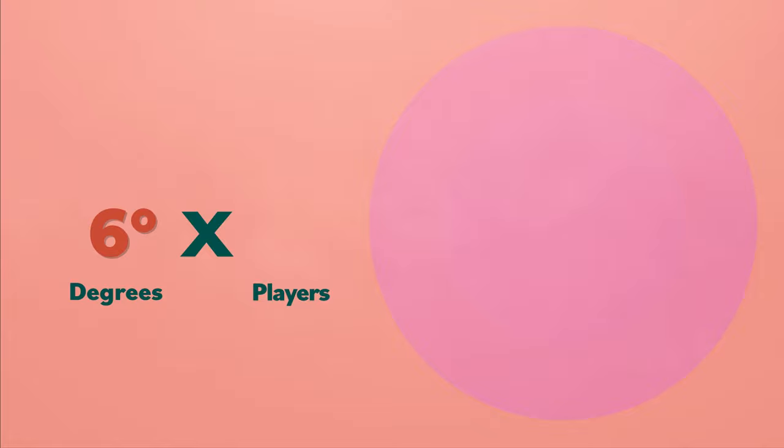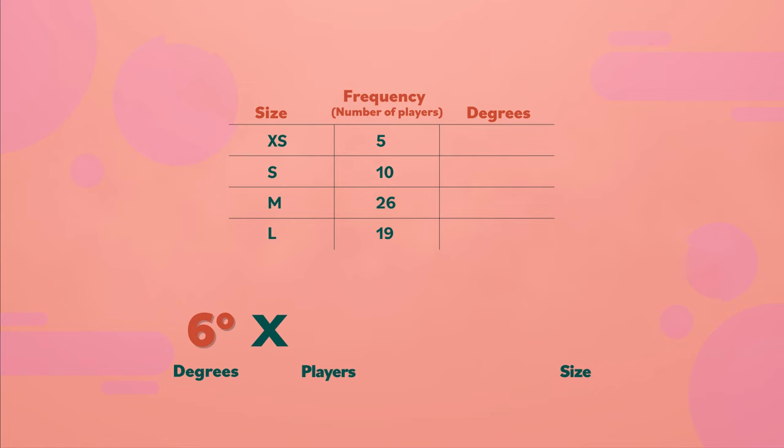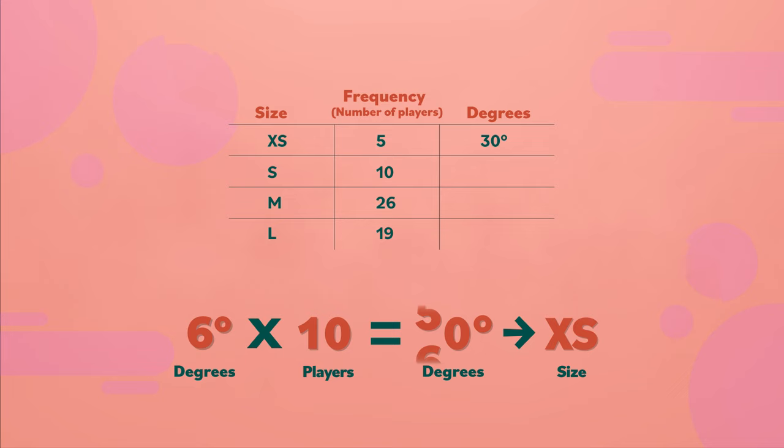If we multiply six degrees by the number of players wearing each size, this tells us how big each section of the pie chart should be. For example, six times five equals thirty. So the extra small section should be thirty degrees in the circle.